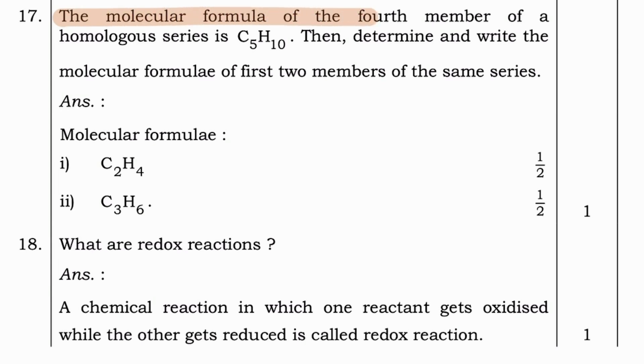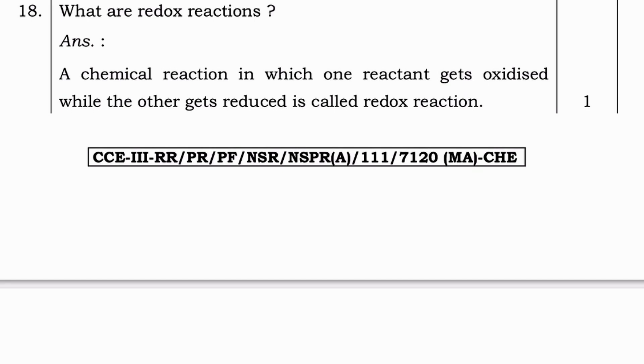Next. The molecular formula of the fourth member of a homologous series is C5H10. Then determine and write the molecular formula of the first two members of the same series. Answer is C2H4 and C3H6.